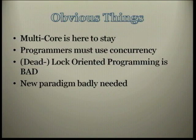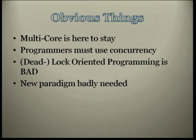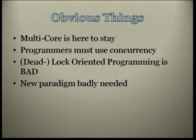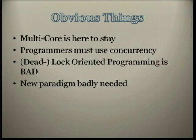Let's start with some obvious things. Multicore is here to stay — that's the future. If multicore is here, then programmers must learn to use concurrency seriously, not just winging it. Lock-oriented programming — or as I call it, deadlock-oriented programming — is bad.